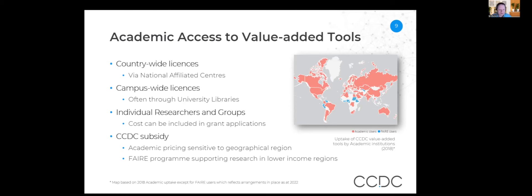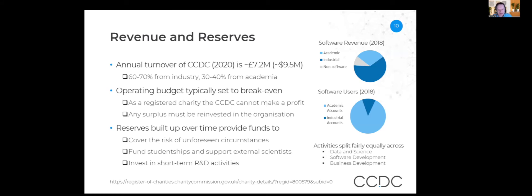We've worked hard to make sure academic licences are priced sensitively to geographic region — we look at GDP and pricing is often related to that. For regions where there is very little research activity, we have a programme that provides free access to a number of those tools. In terms of how this breaks down into overall CCDC funding, what I've described represents about 30 to 40 percent of our revenue, with 60 to 70 percent coming from industry. There is also an increasing non-software revenue stream.